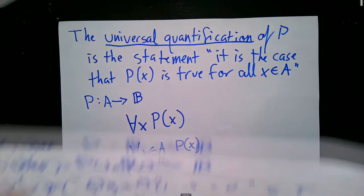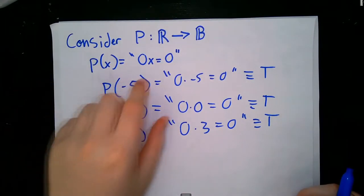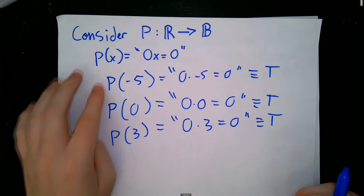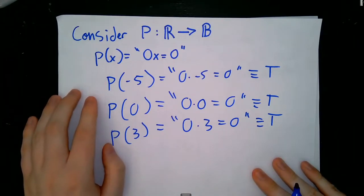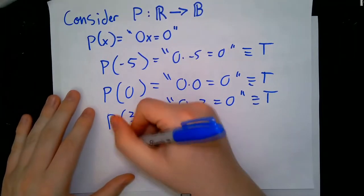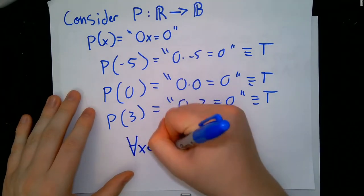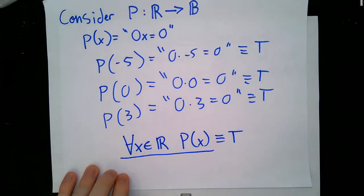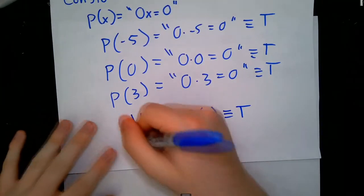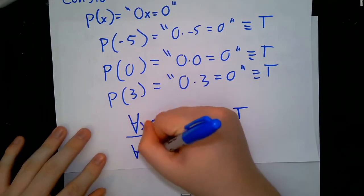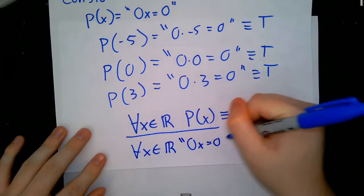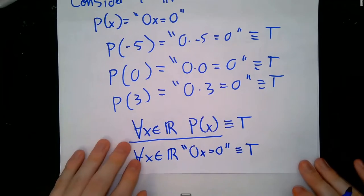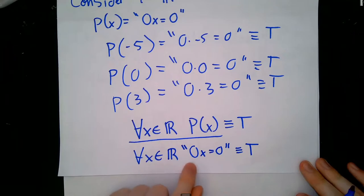For example, coming back to the predicate p from the real numbers to the boolean values, where p(x) equals 0 times x equals 0: because we know that any real number we pass in gives a true proposition, we can say that the proposition ∀x in the real numbers, p(x) is equivalent to true. We can also write it as: for all x in the real numbers, 0x equals 0 is equivalent to true. This whole thing is a proposition saying that no matter what real number we plug in, we end up with a true proposition.